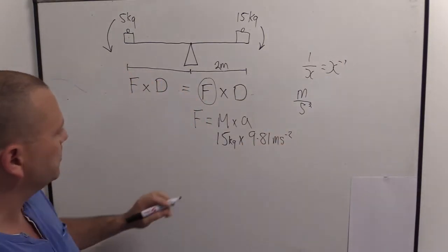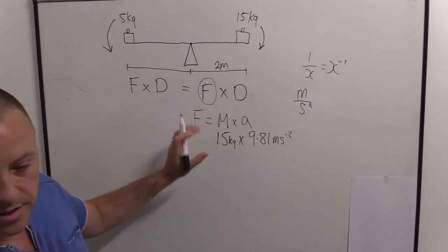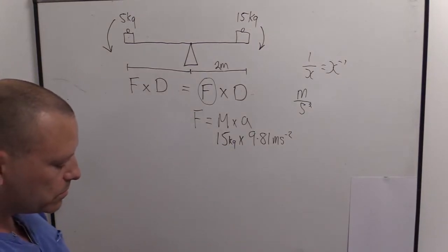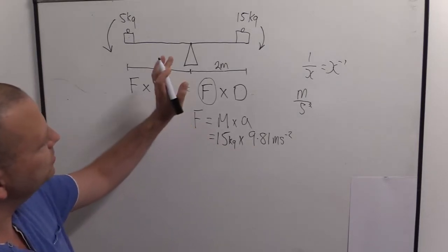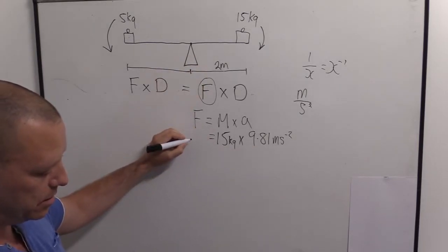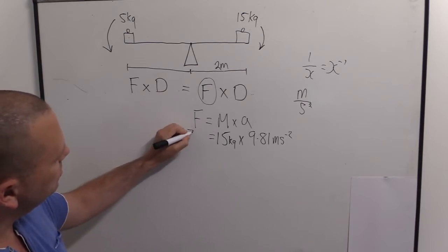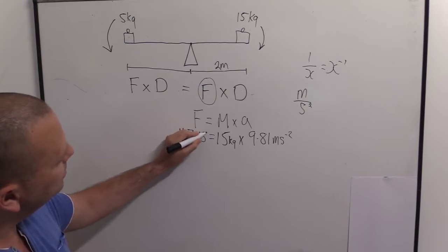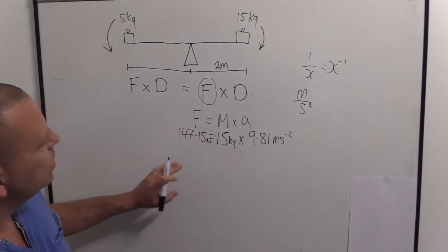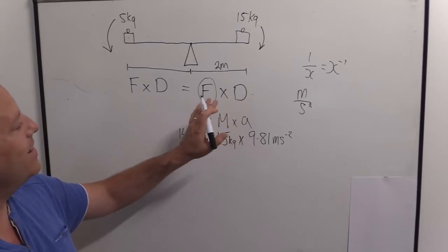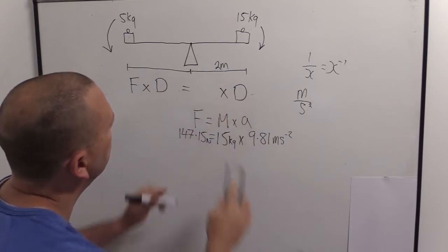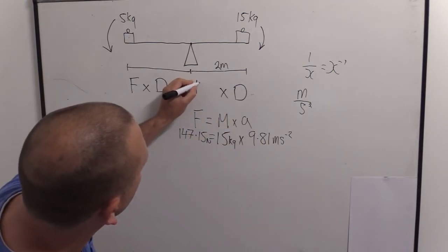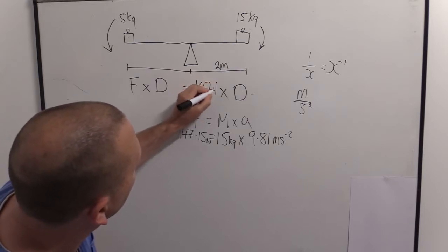So we can solve for force this side and I will just keep the transposition a bit clearer later. So 15 times 9.81 will give us our force this side, and that is 147.15 newtons. And we've got our distance as well, so actually we can complete this whole side. We can replace that with what we just calculated, 147.15.